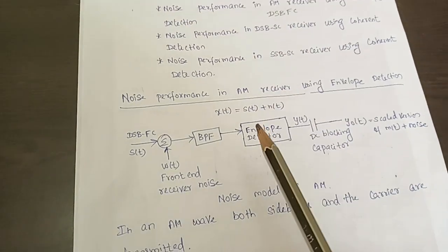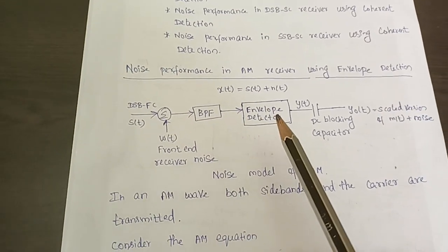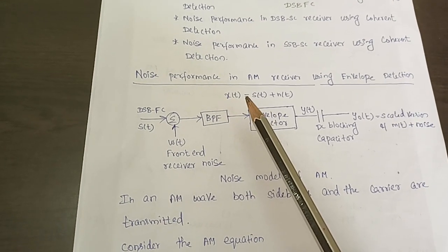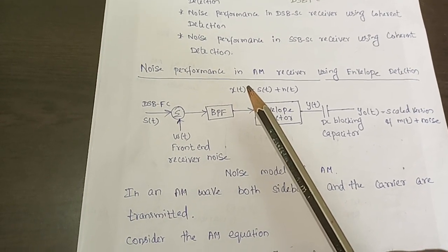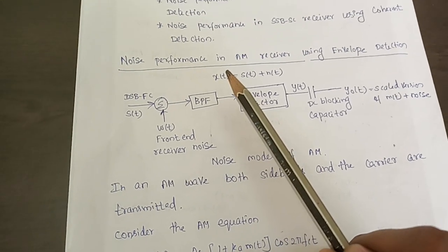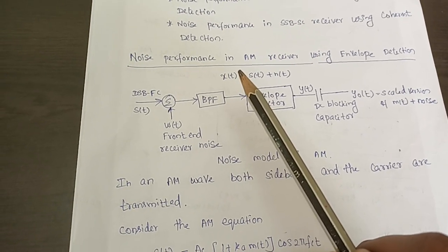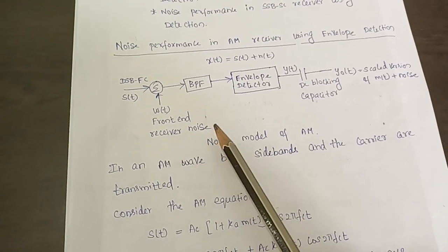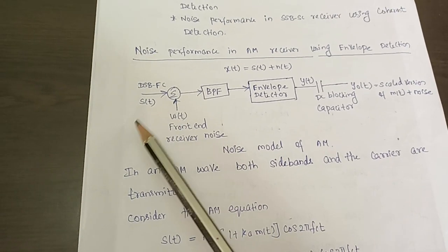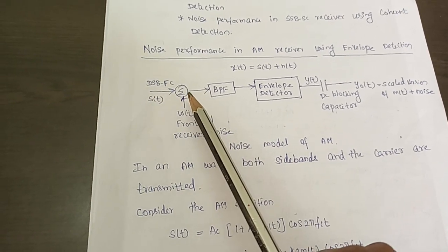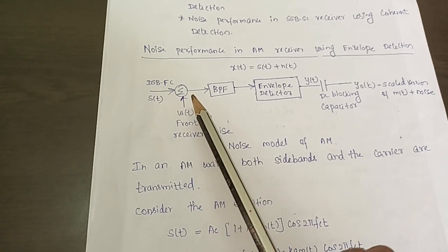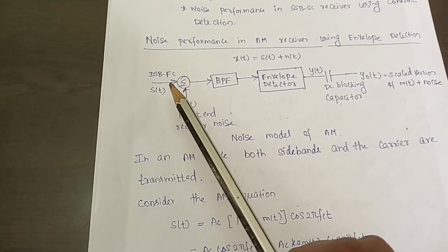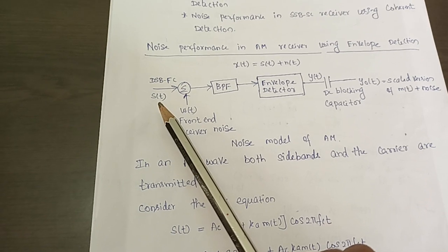Now in this lecture, let us see the noise performance of AM receiver using envelope detector. Whenever we say AM, it indirectly means that it is DSBFC, that is double sideband full carrier. This is the noise model. This block diagram is the noise model of AM receiver using envelope detector. The input to this noise model is the DSBFC wave, which is double sideband full carrier wave. We are representing this as S of T.